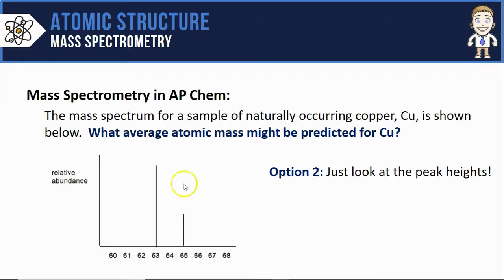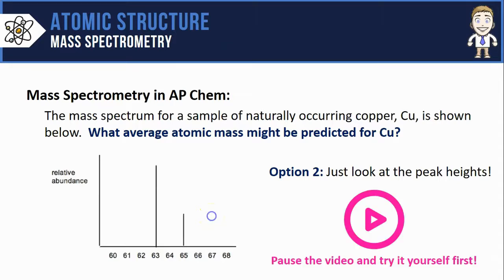Here's a different mass spectrum for a sample of naturally occurring copper. Why don't you pause the video and see if you can follow this type of thinking and make a guess for what the average atomic mass might be for copper.